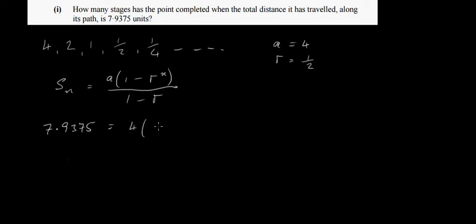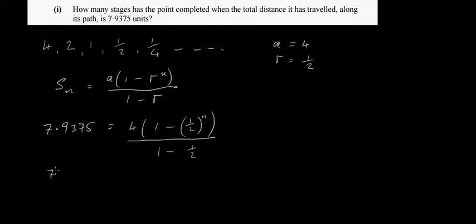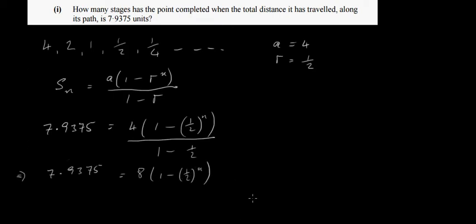Our a is 4, we have 1 minus r (which is a half) to the power of n. We don't know what n is — we need to find how many stages are needed to achieve 7.9375 units. Dividing by 1 minus a half: on the bottom we have a half, and 4 divided by a half gives us 8. So we get 7.9375 = 8(1 − (1/2)^n).